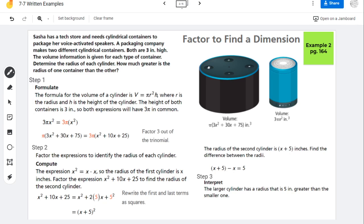Sasha has a tech store and needs cylindrical containers to package her voice-activated speakers. A packaging company makes two different cylindrical containers, both three inches high. The volume information is given for each type of container. Determine the radius of each cylinder. How much greater is the radius of one container than the other?